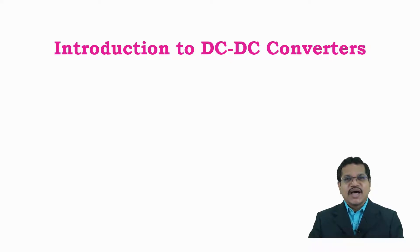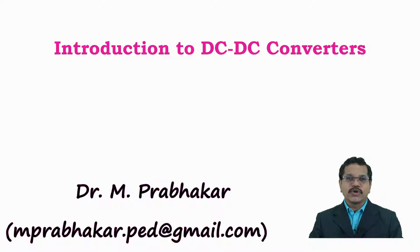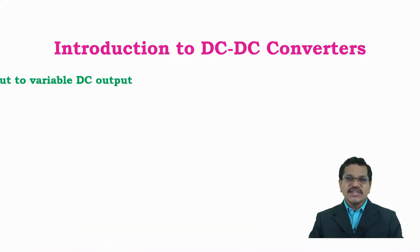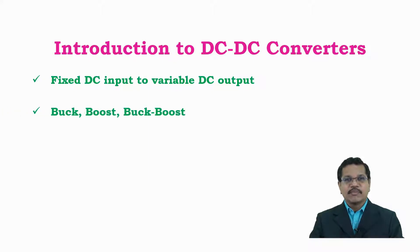In this video, I'll introduce DC to DC converters to you. DC to DC converters are power electronic converters which convert fixed DC voltage input to variable DC voltage output. These DC to DC converters are available in various types depending on their input-output voltage relationship. They are familiarly known as buck converter, boost converter, and buck-boost converter.